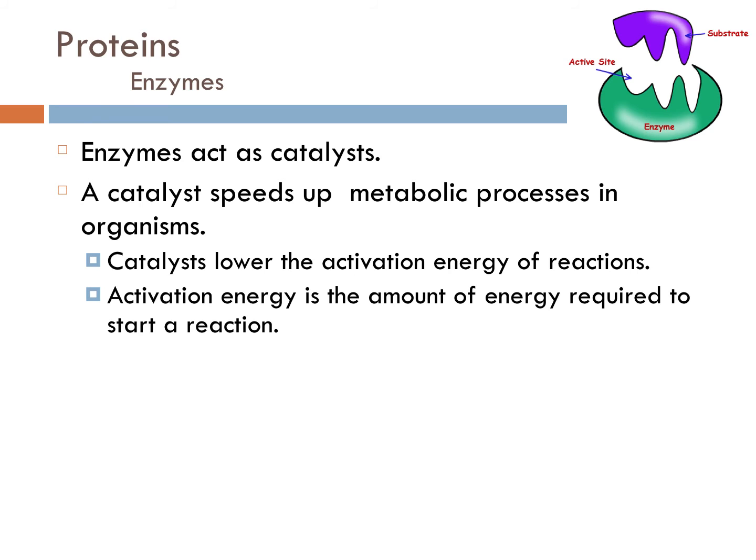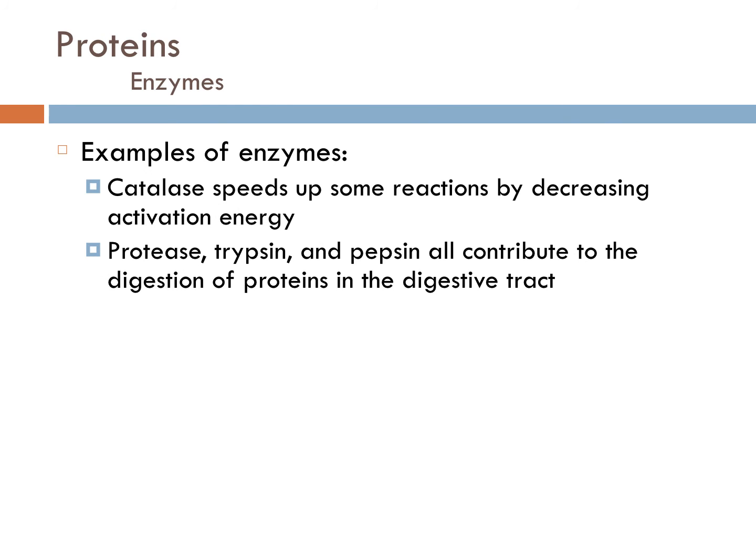Enzymes are a protein that act as catalysts. Catalysts speed up the metabolic processes in organisms, so things that would normally take a very long time to occur naturally can be speeded up by using enzymes. A catalyst lowers the activation energy of reactions, and that activation energy is the amount of energy required to start a reaction. Some examples of enzymes are catalase, which speeds up reactions by decreasing the activation energy, and we also have protease, trypsin, and pepsin.